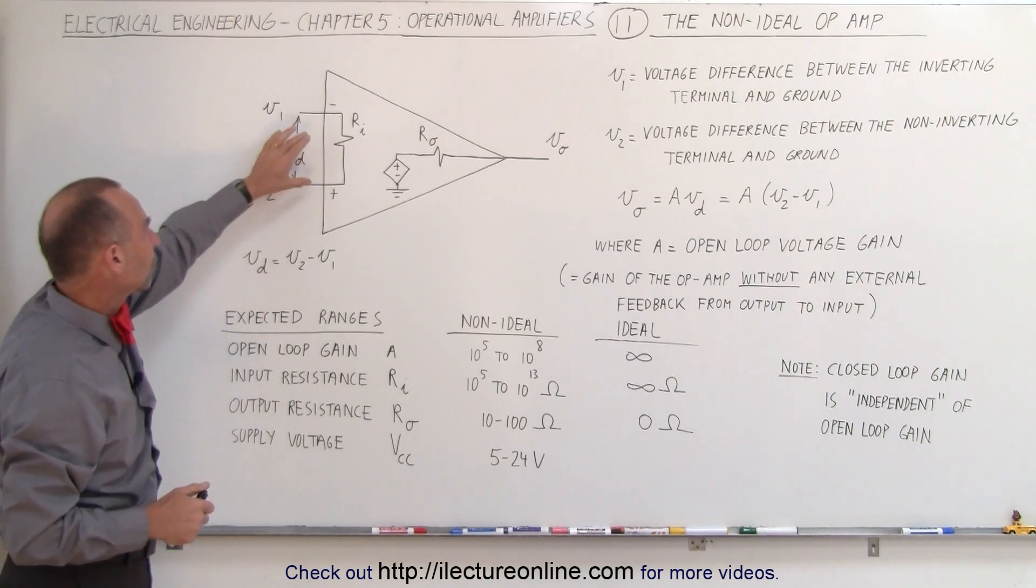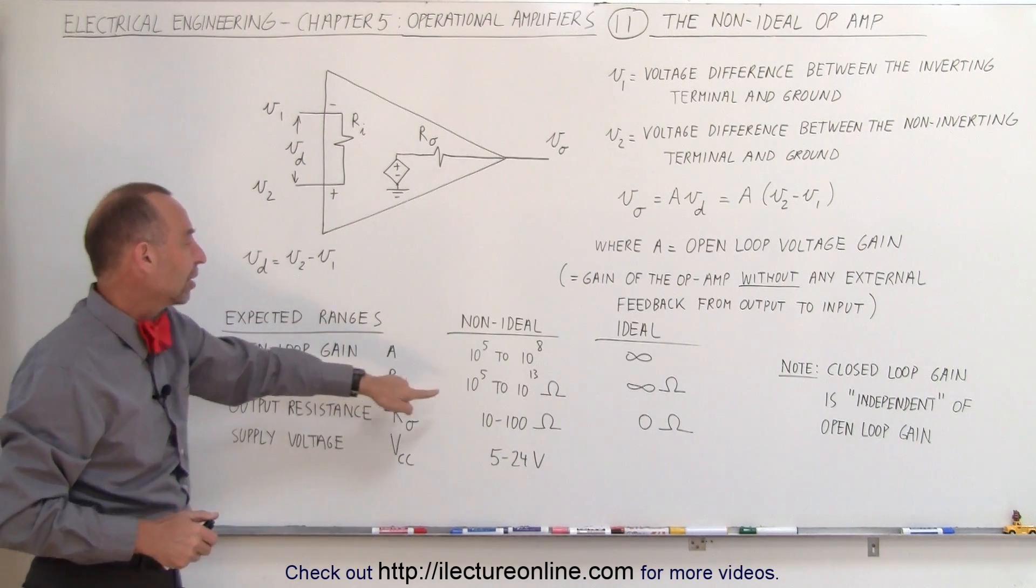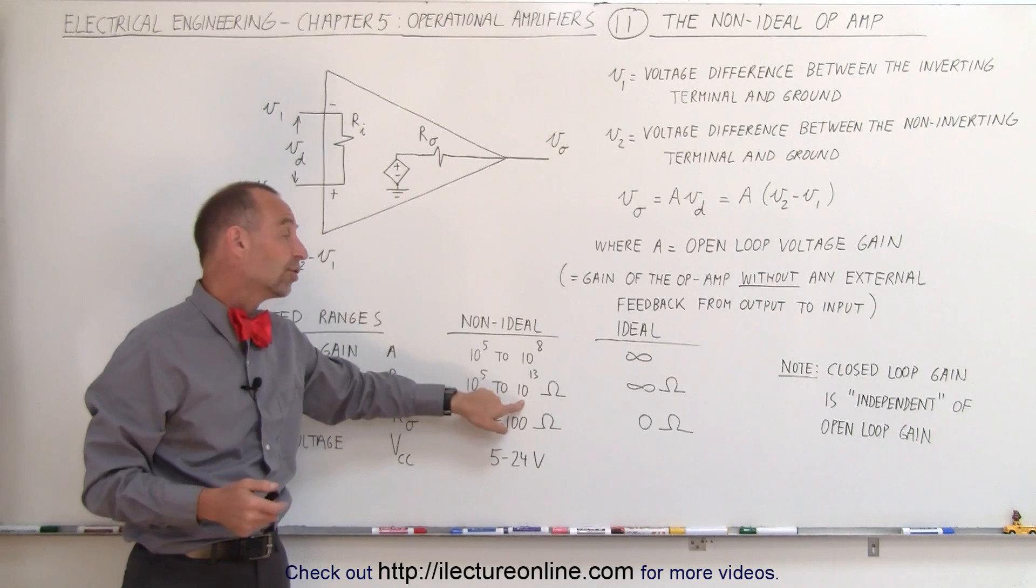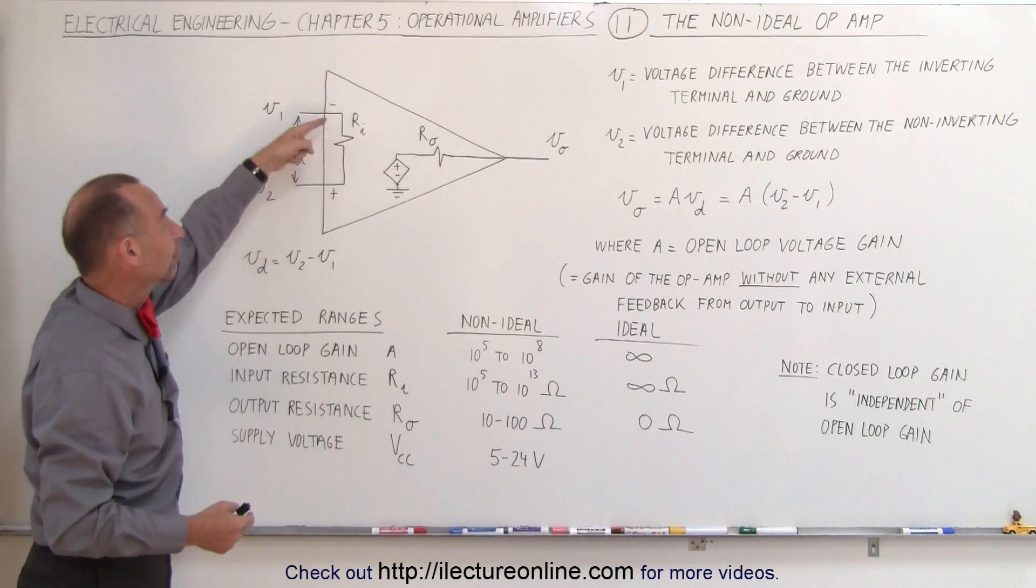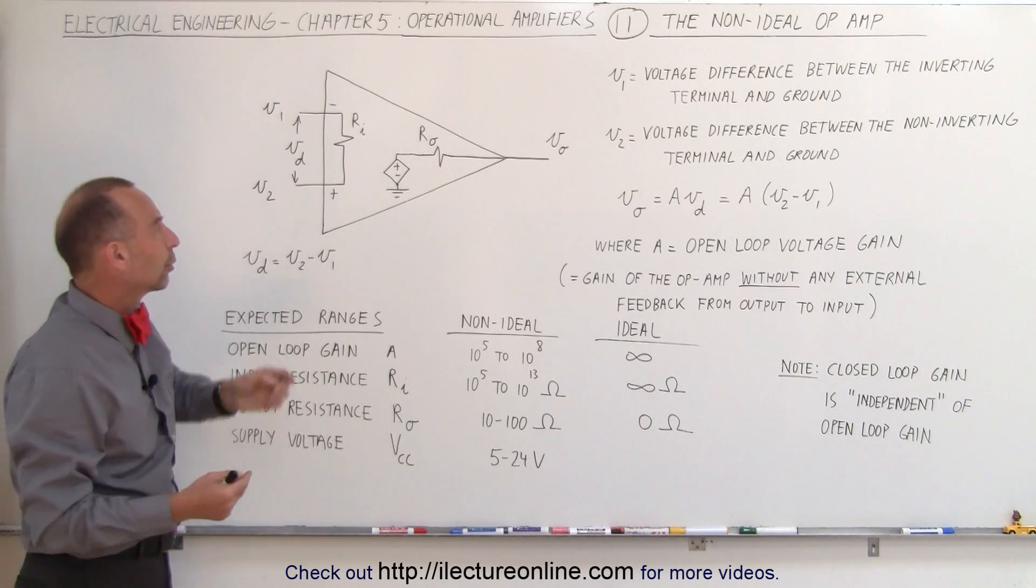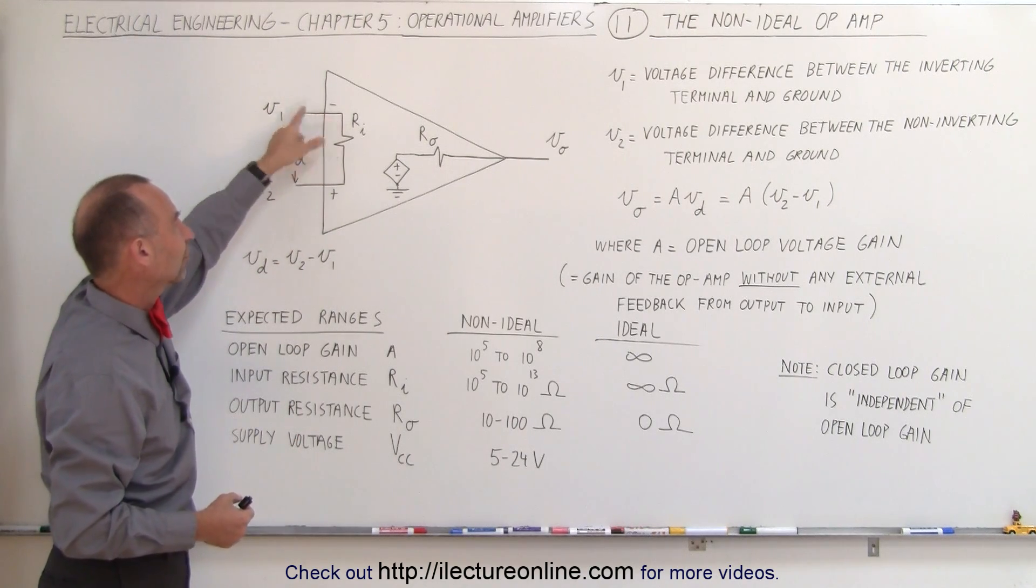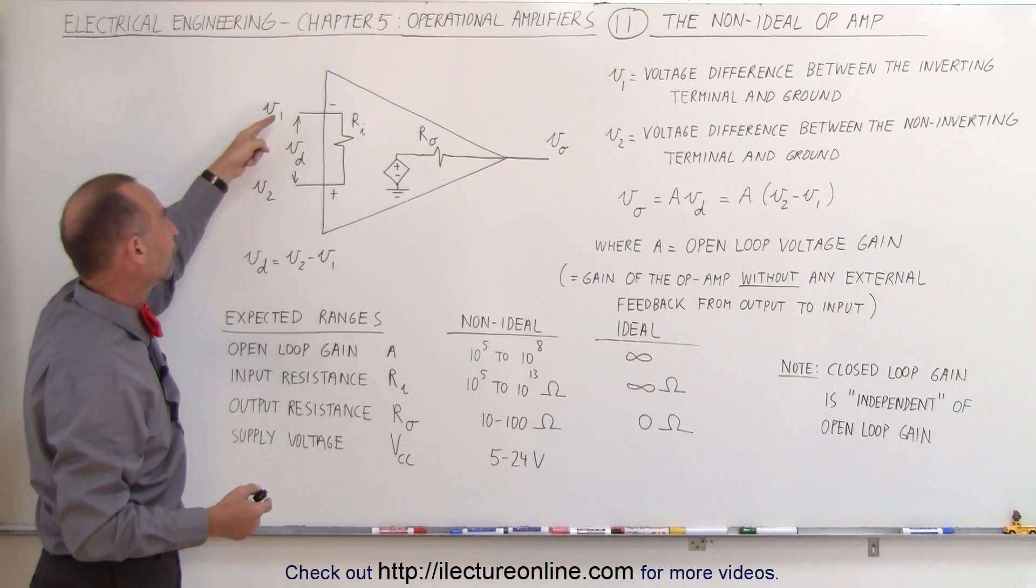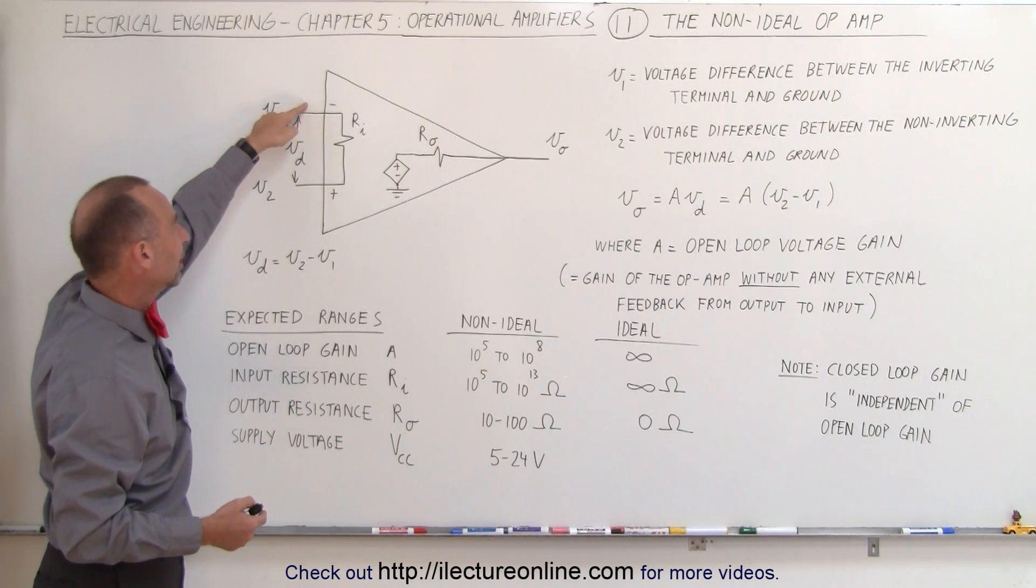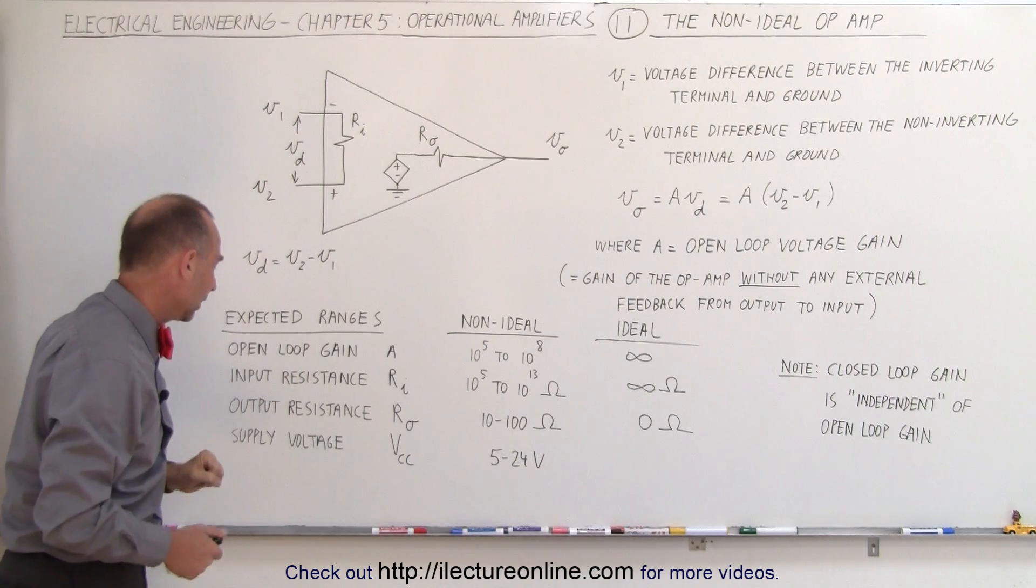The input resistance over here is typically very large, 10 to the 5th to 10 to the 13th ohms, and ideally you would get infinity there so that there's no current flow at all. For simplicity, we're going to assume that this is a very large resistance, so therefore there's typically no current to be accounted for from the inverting input to the non-inverting input.